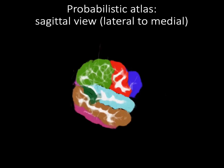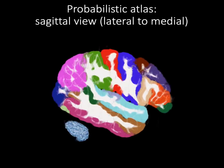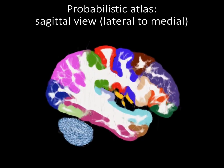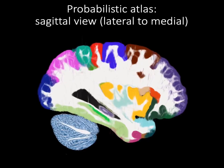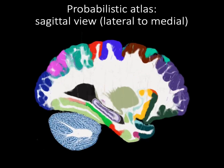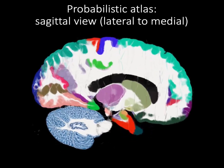This video shows sagittal slices of the atlas in lateral to medial order. We see the hippocampal regions in blue, the amygdala in green, and the thalamus in purple.